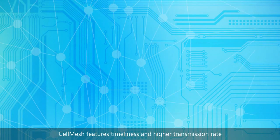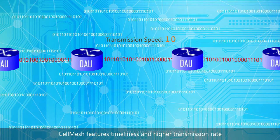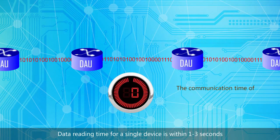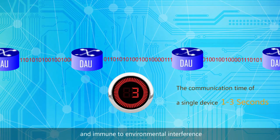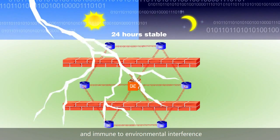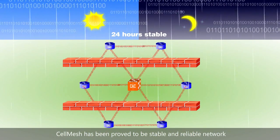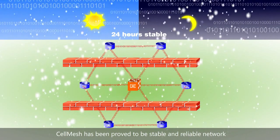CELL MESH features time limits and higher transmission rates. Data reading time for a single device is within one to three seconds and is immune to environmental interference. CELL MESH has been proven to be a stable and reliable network.